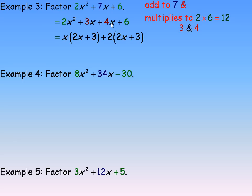Factoring a 2 out of 4x gives us 2x, and a 2 out of 6 gives us 3. And once again, what's in the brackets is the same — if it's not, you've made an error. So we can factor a 2x plus 3 out, and the other factor would be x plus 2.